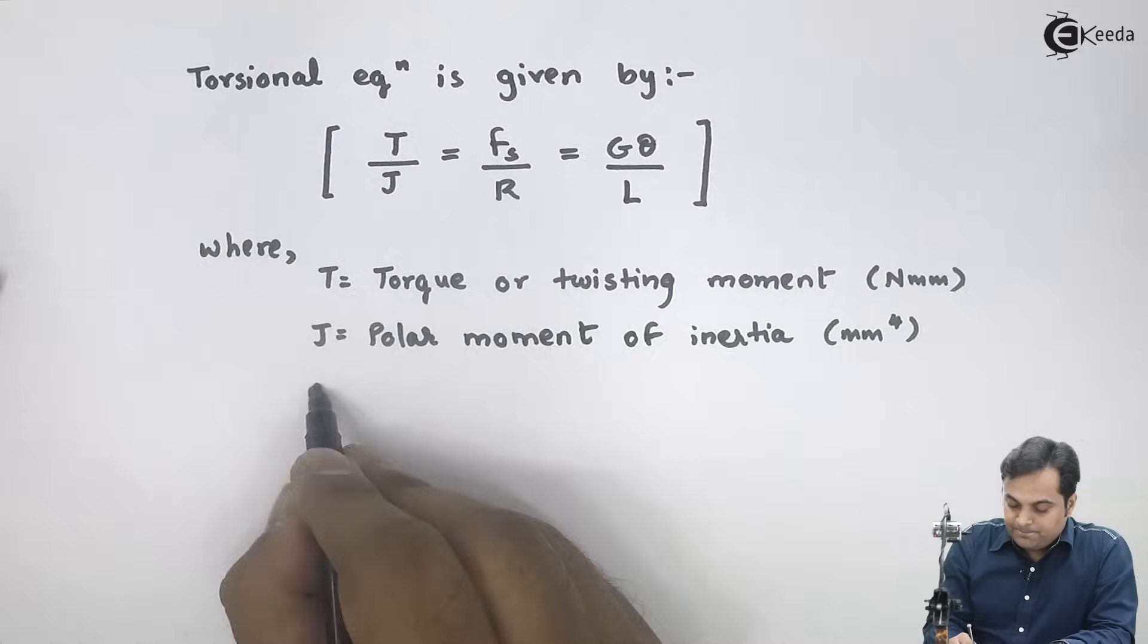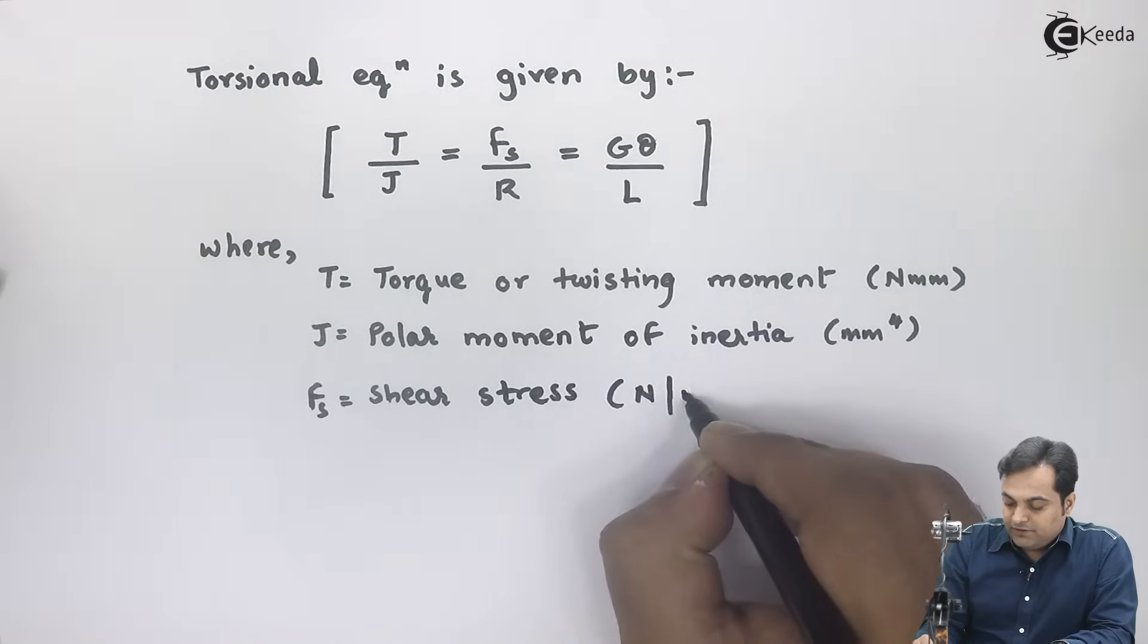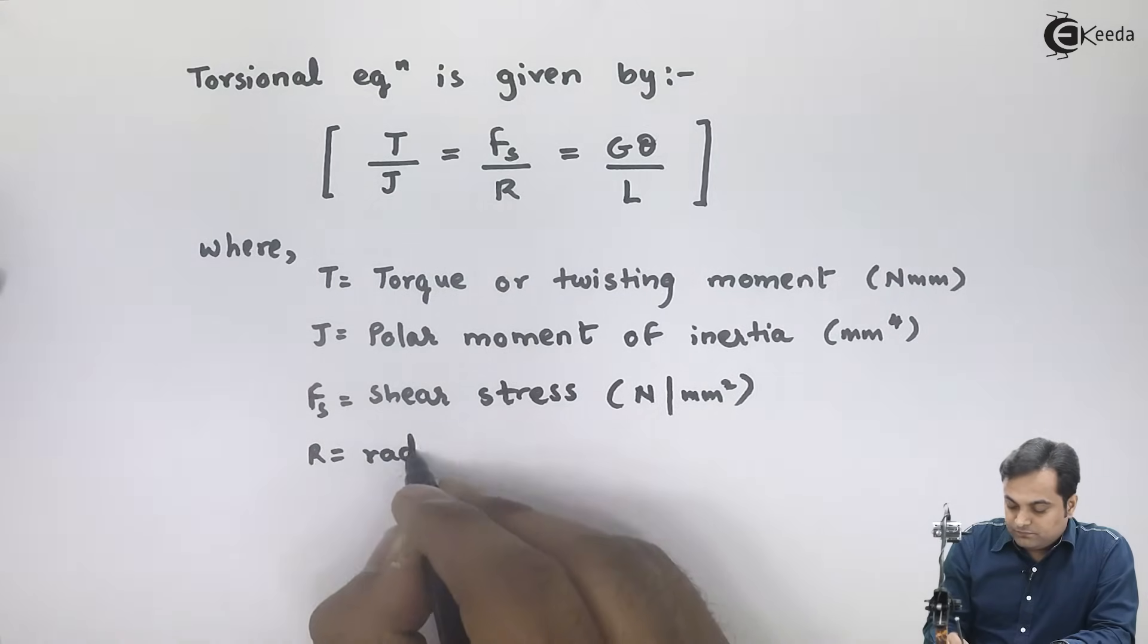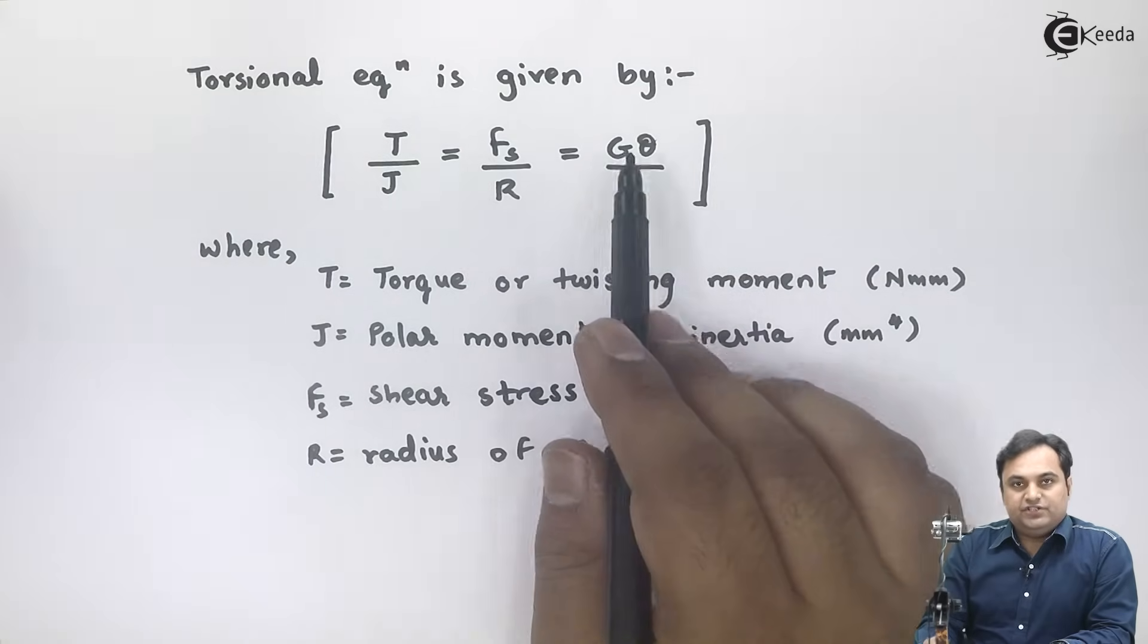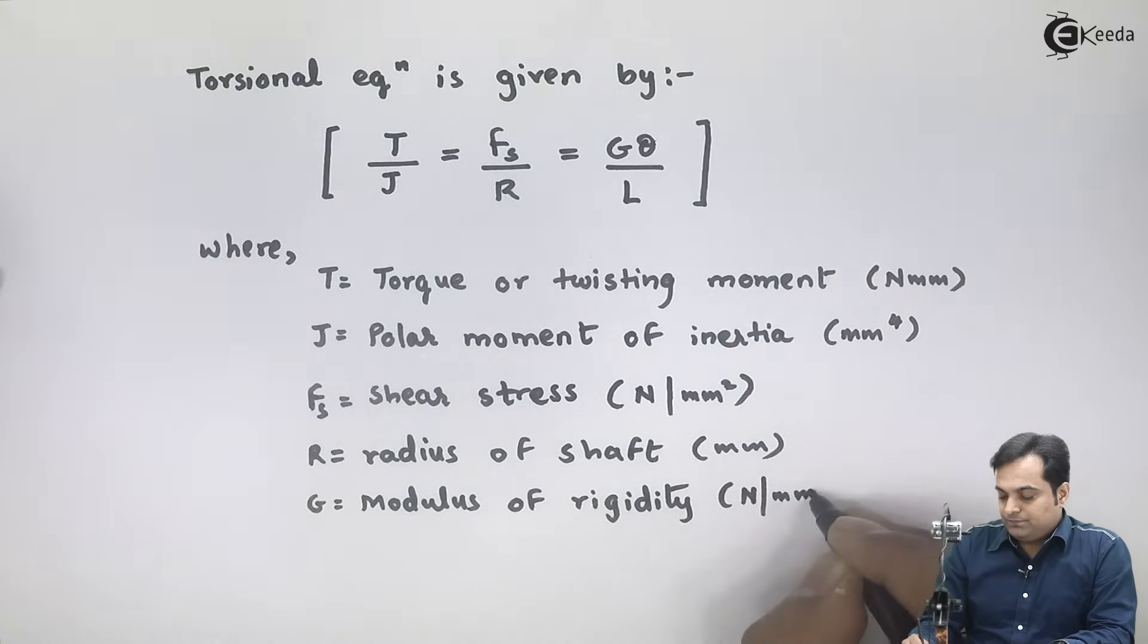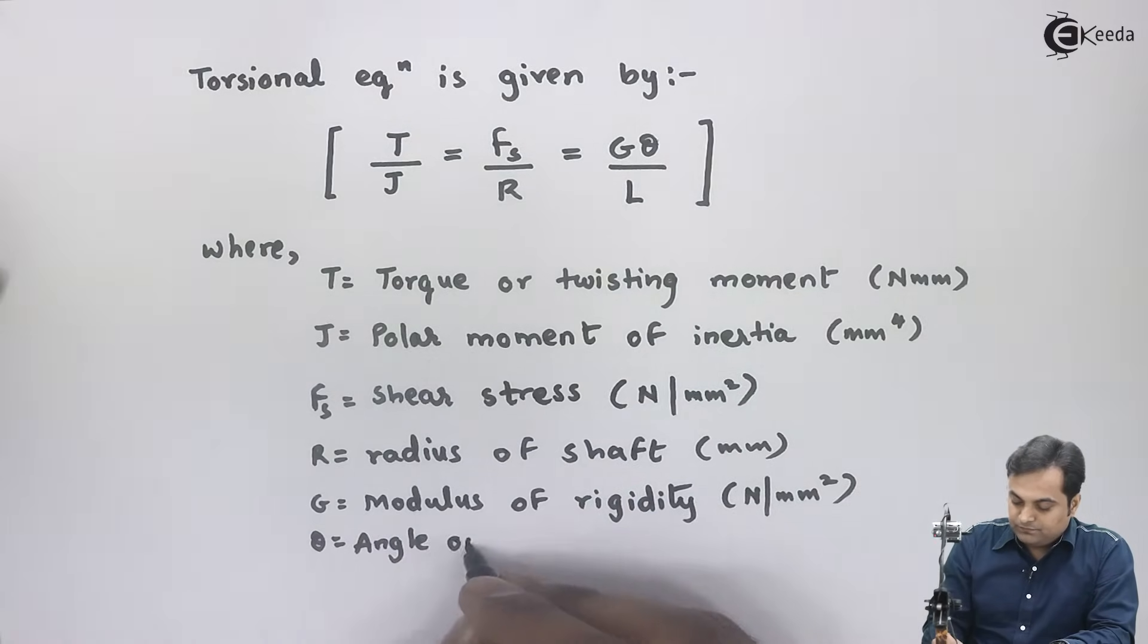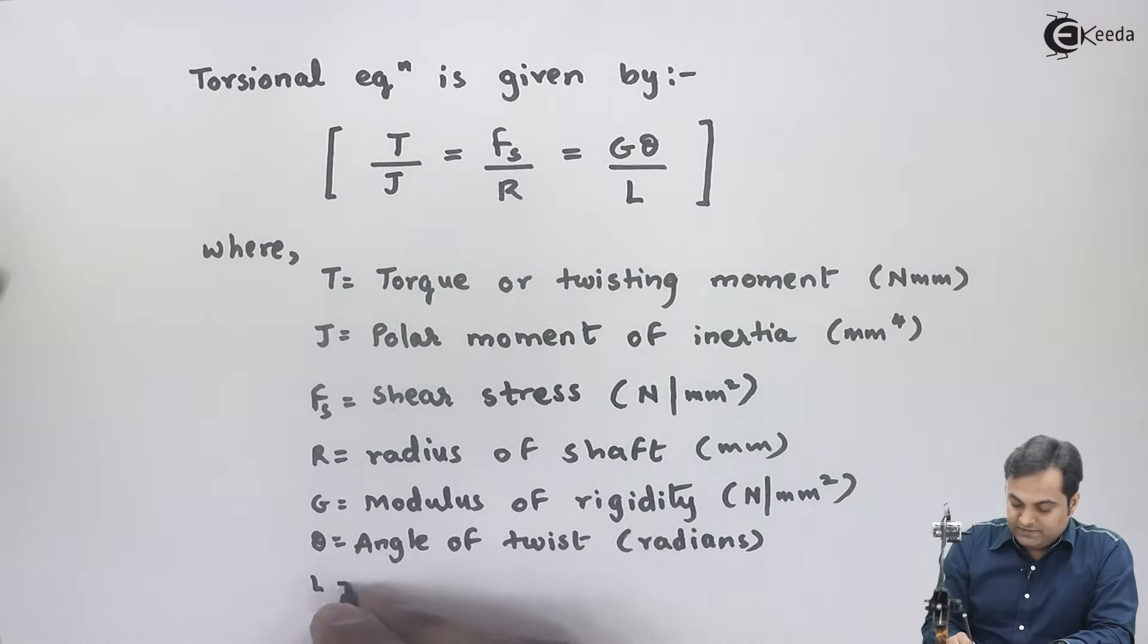J is called as polar moment of inertia, unit will be in mm raised to 4. Fs is called as shear stress, unit will be Newton per mm square. Capital R is the radius of shaft. G means modulus of rigidity, unit will be Newton per mm square.